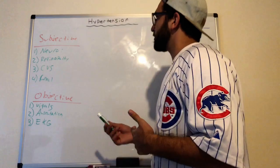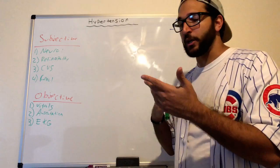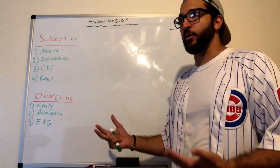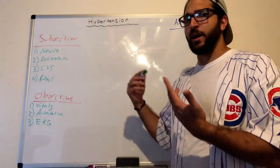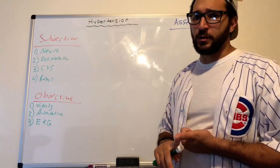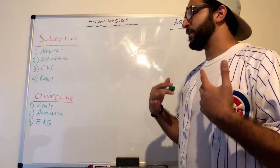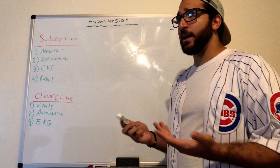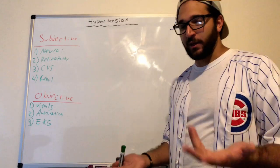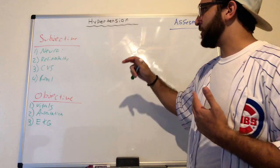For assessment of a hypertensive patient, we use subjective and objective findings. Subjectively, after prolonged hypertension we want to assess for organ damage. Neurologically: ask about headache, slurred speech, weakness in extremities, or ataxia. For the eyes, ask about retinopathy — any blurry vision or vision changes.